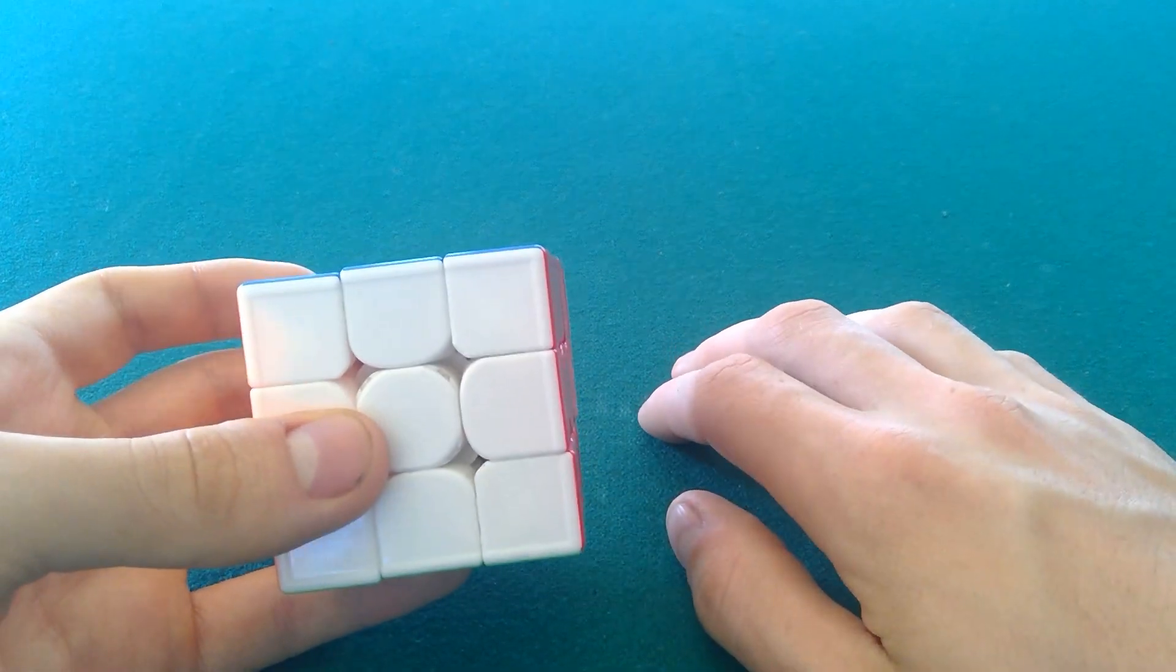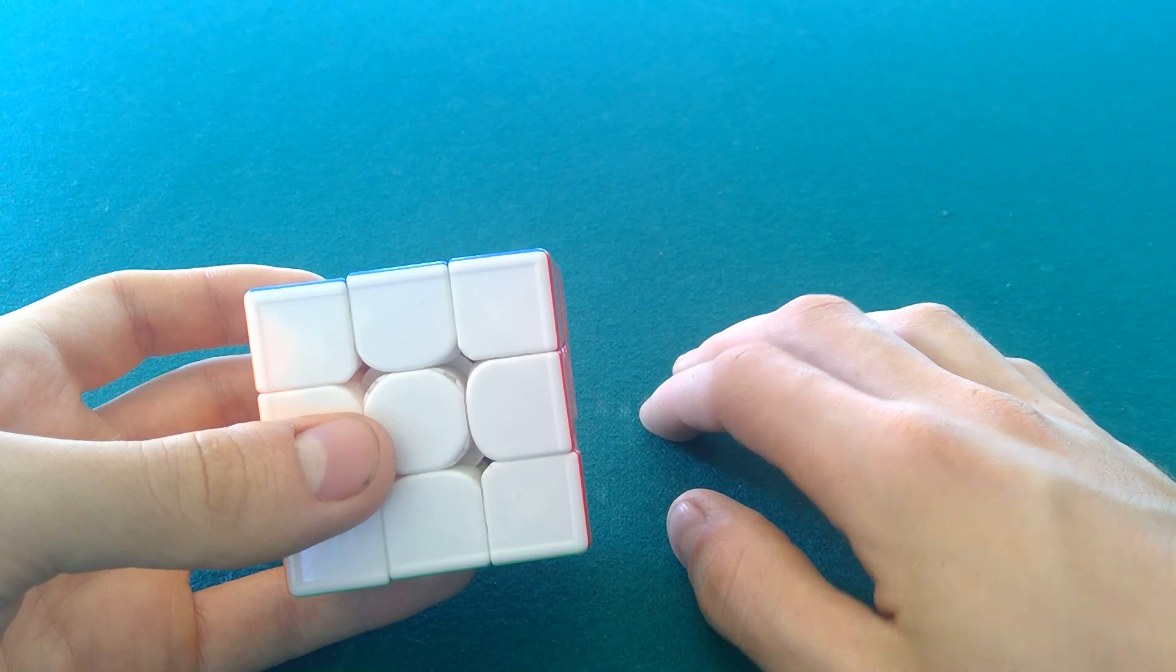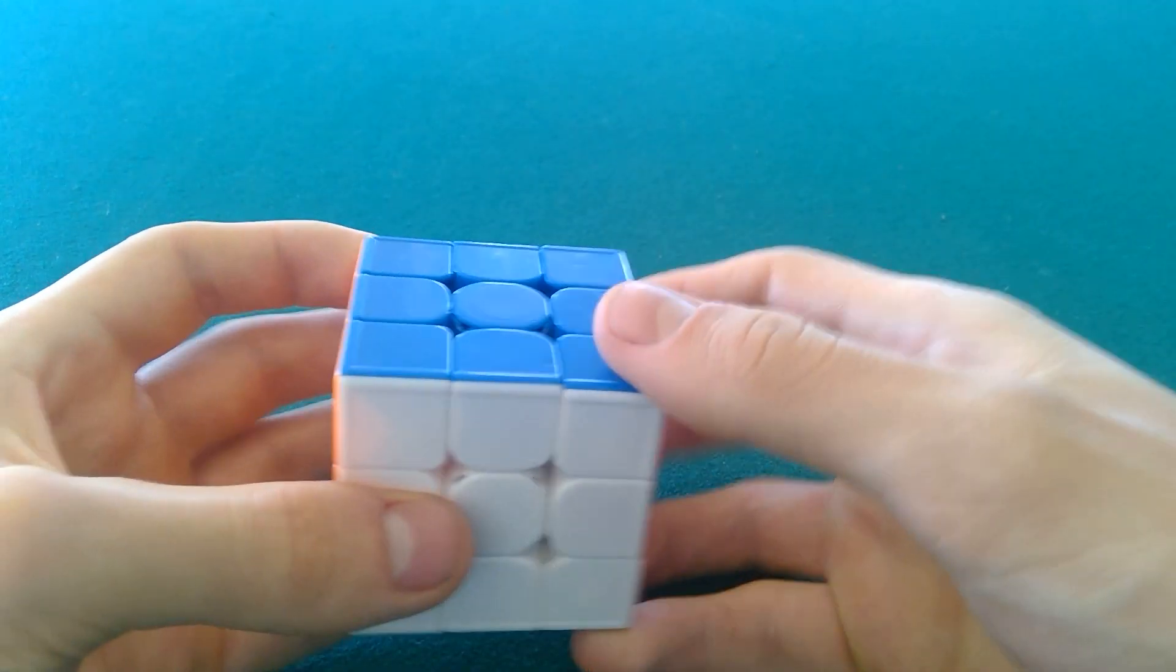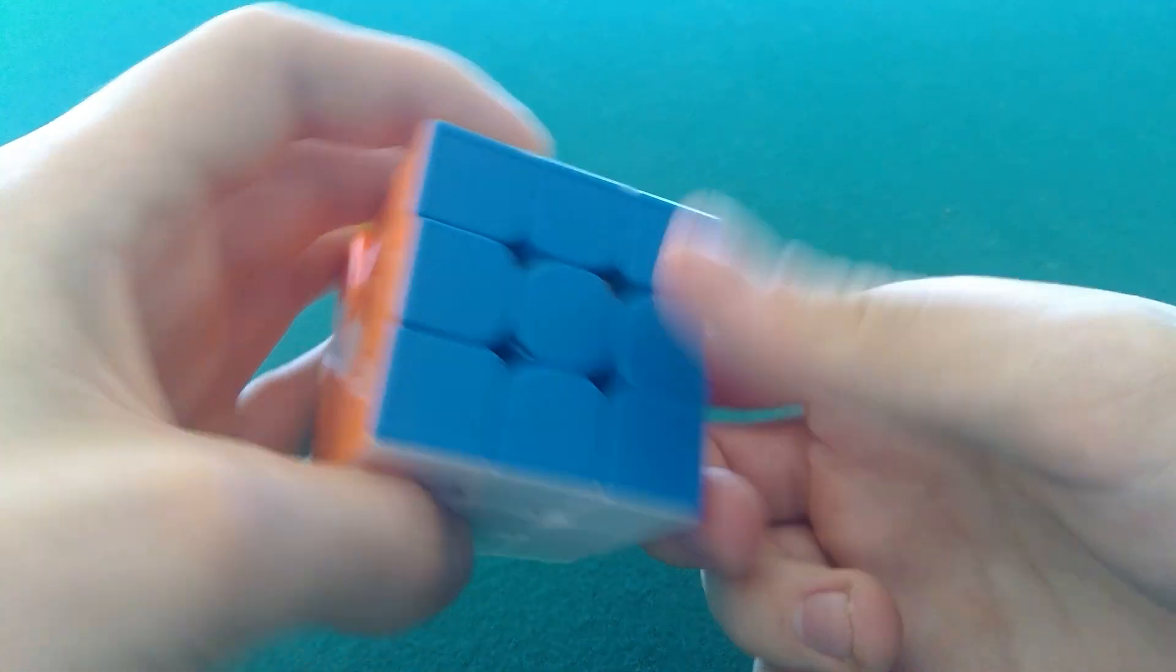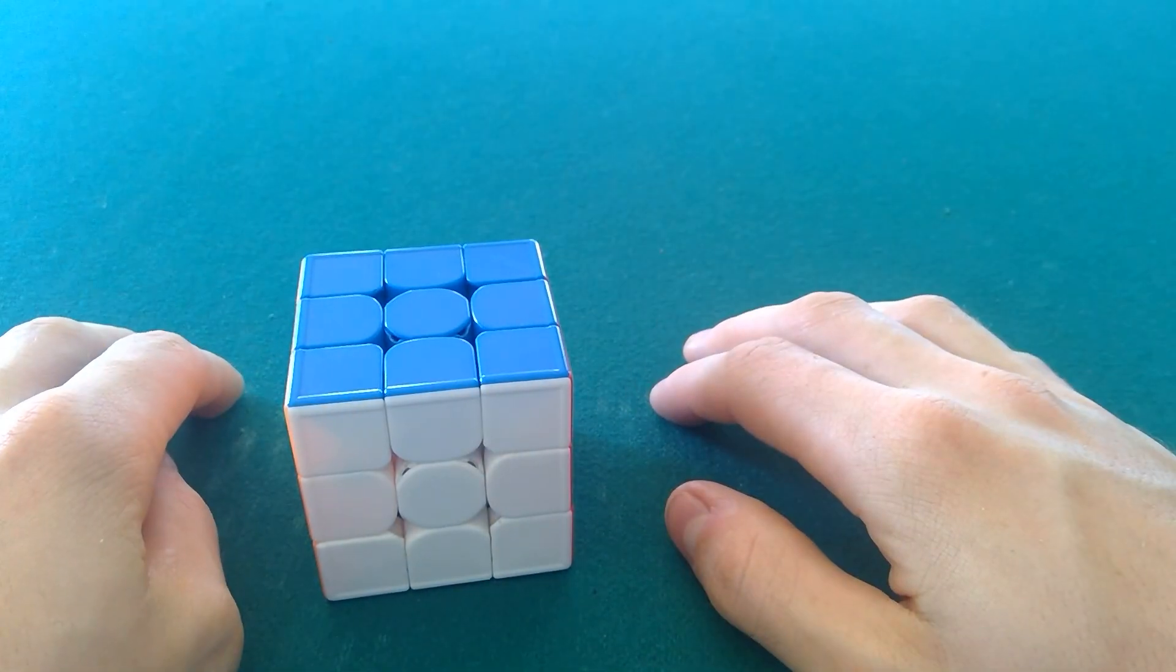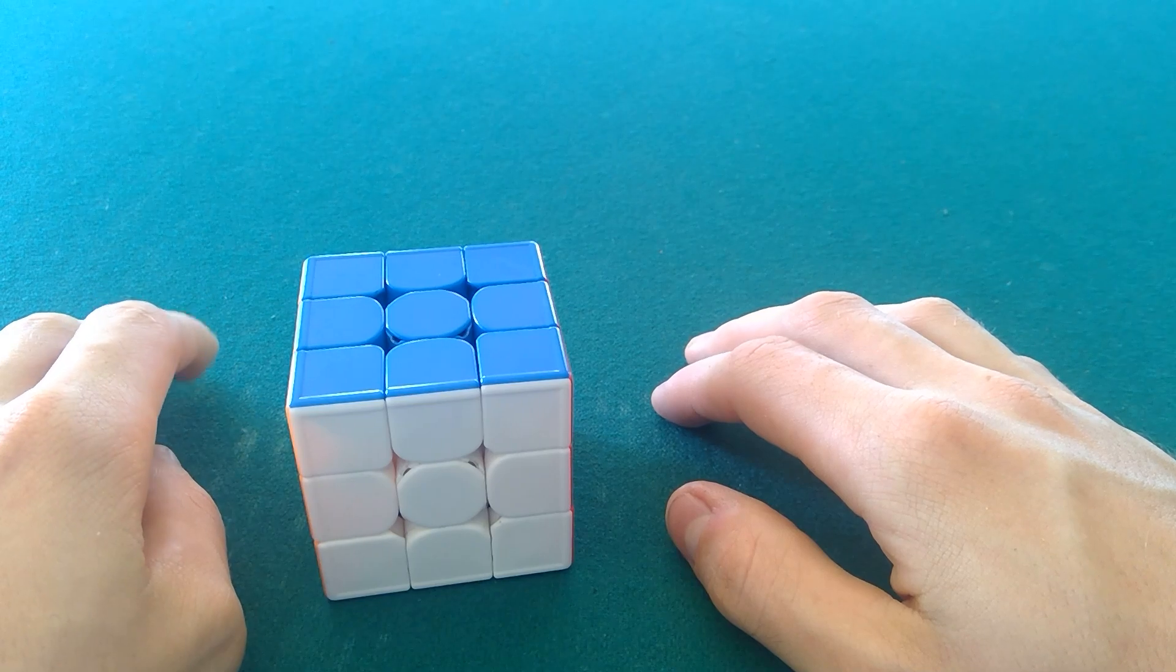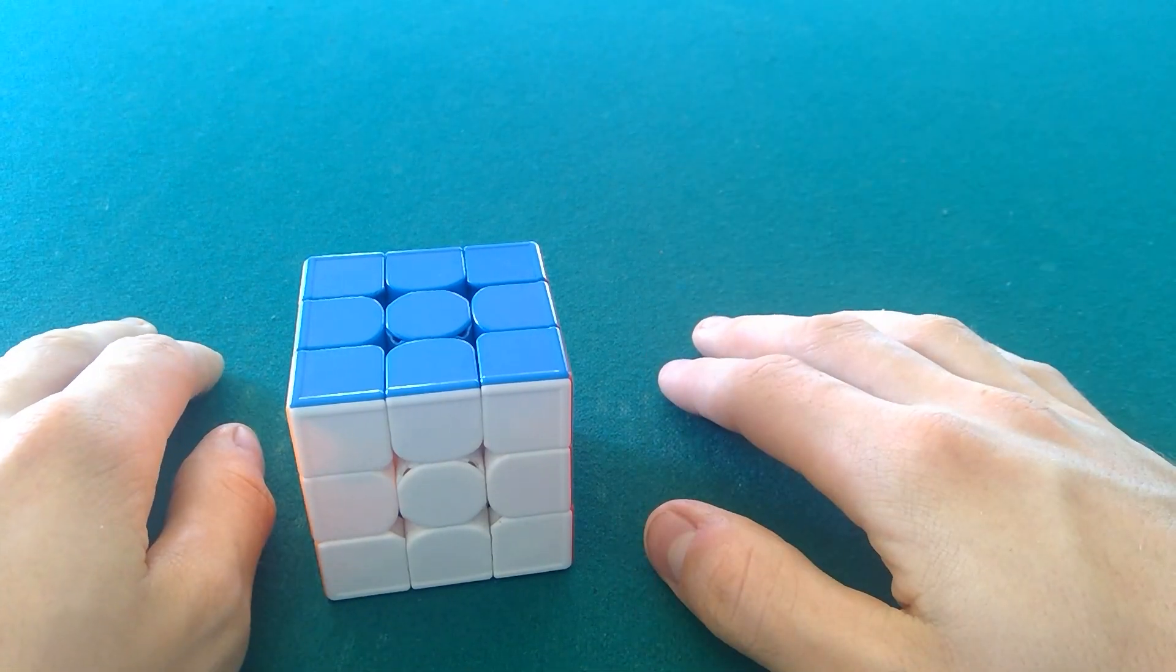Those are super simple. You can do like R2 R U2 R U2 R U2 R U2. Be creative with that one. Fun. Next one is another RU one.